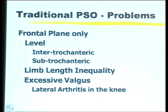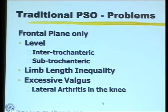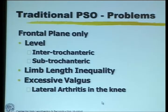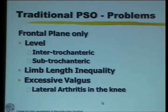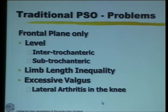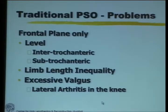to restore the length. With a traditional pelvic support osteotomy, there are some problems. One is that this is usually in the frontal plane only when you do it with internal fixation. The level may be intertrochanteric or subtrochanteric and the problem of limb length inequality still remains. When you do an excessive valgus with the pelvic support conventionally, you always get a lateral deviation of the mechanical axis and many of these patients develop lateral arthritis in the knee ultimately.